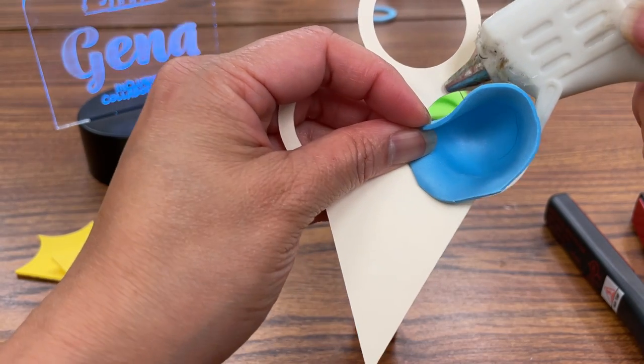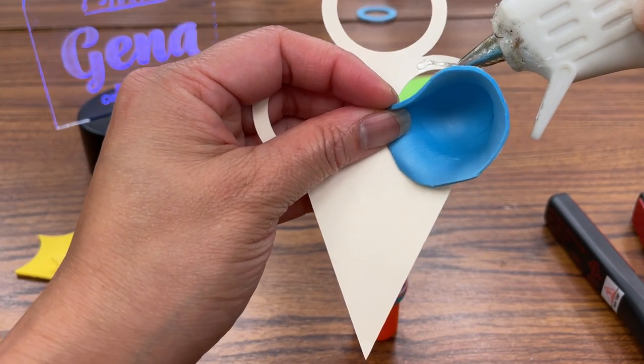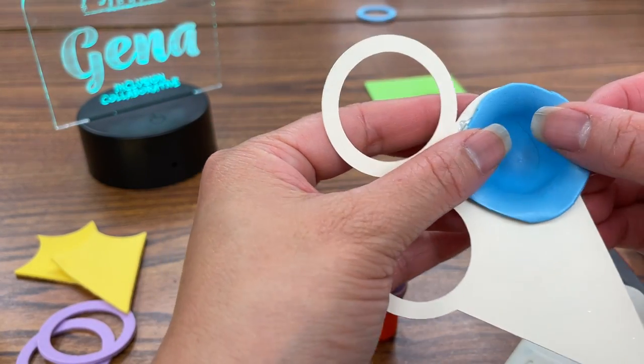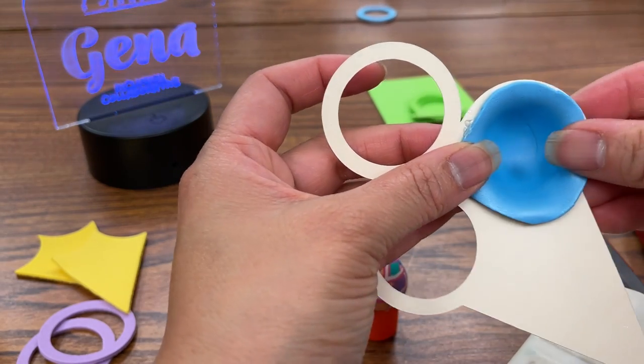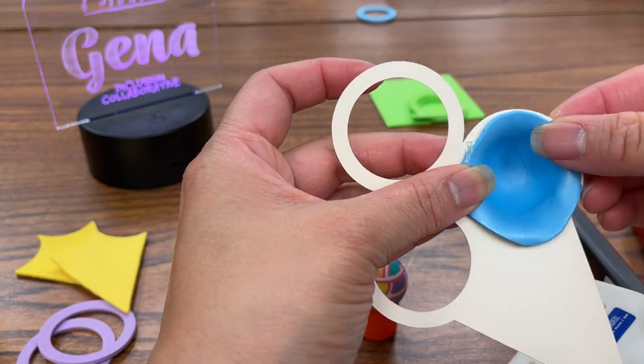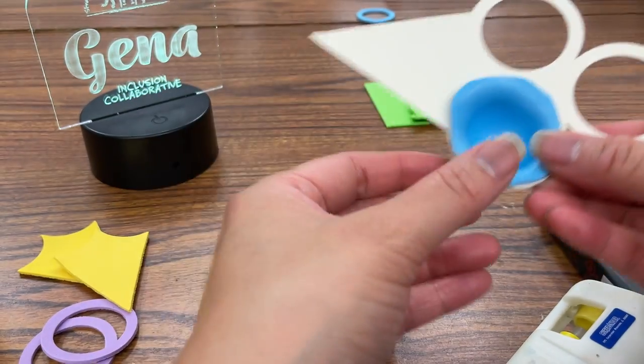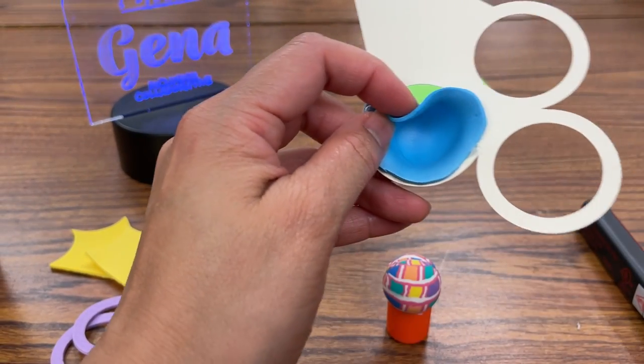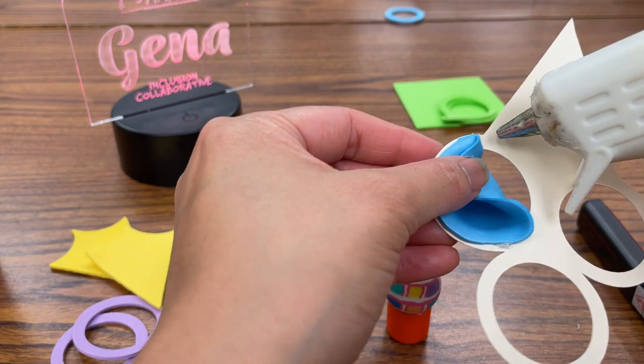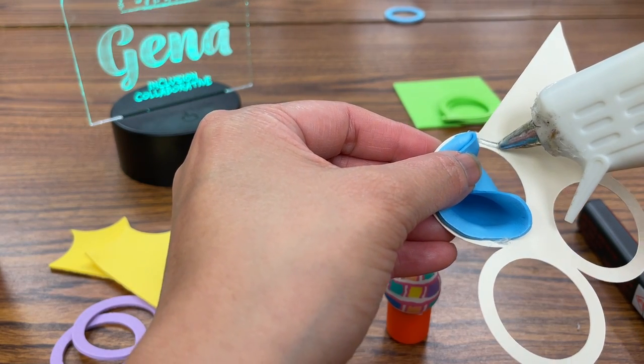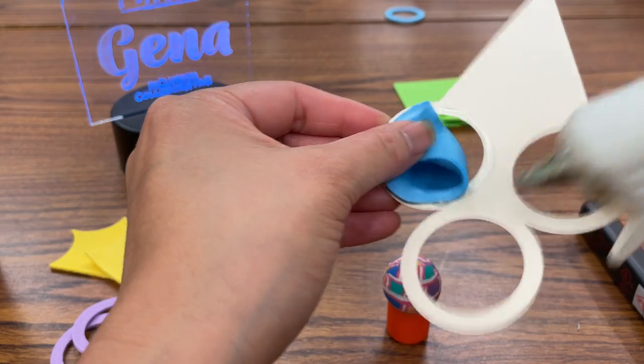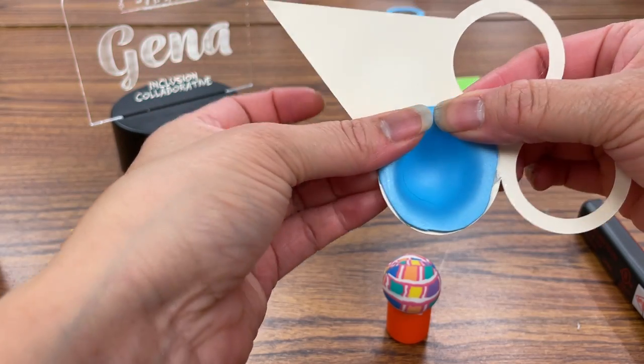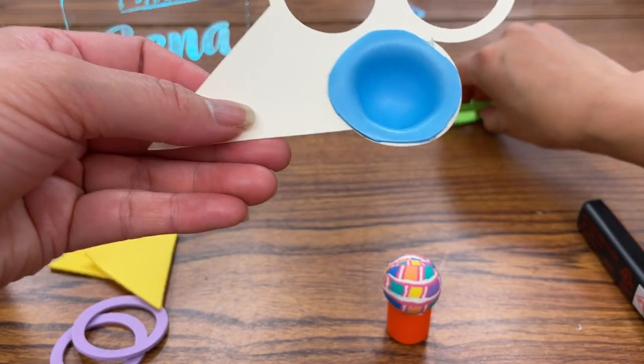I will take my glue gun and then I like just to do a half of a circle and then glue it and then turn it around and then I glue the other half of the circle. I see I need a new glue stick, okay here we go.